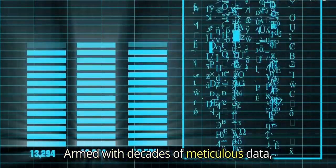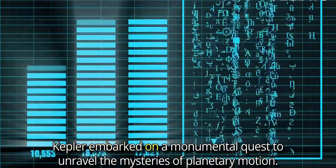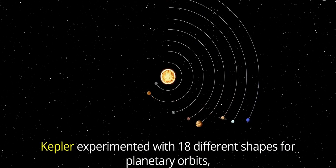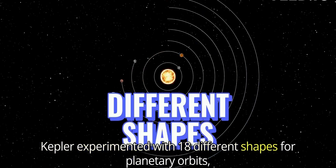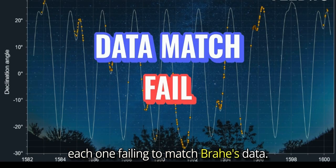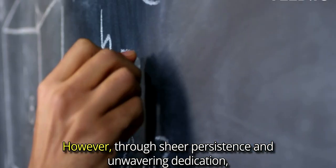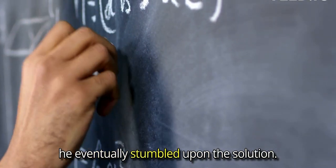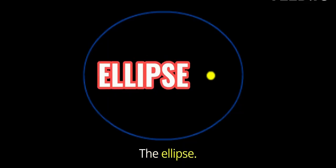Armed with decades of meticulous data, Kepler embarked on a monumental quest to unravel the mysteries of planetary motion. Kepler experimented with 18 different shapes for planetary orbits, each one failing to match Brahe's data. However, through sheer persistence and unwavering dedication, he eventually stumbled upon the solution, the ellipse.